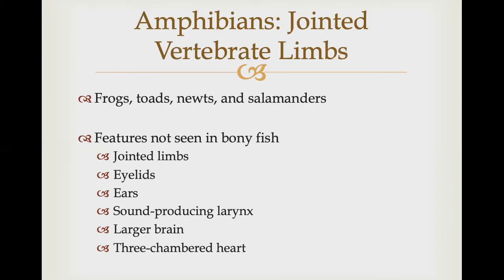The first chordates to make their way to land were the amphibians. Amphibians — whose name means they live both on land and in water — are represented today by frogs, toads, newts, and salamanders. Some brightly colored ones have skin toxins that sicken or kill predators, and usually their color pattern is protective camouflage. Aside from jointed limbs, amphibians have other features not seen in bony fishes: eyelids to keep eyes moist, a sound-producing larynx, and ears to pick up sound waves. Their brains are much larger than those of fish, and they also have a three-chambered heart.